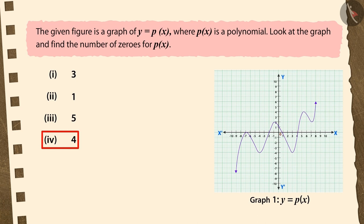If you have chosen the fourth option, it is the correct answer. Well done! This graph intersects the x-axis at a total of four points. So here, the number of zeros of the polynomial px will be four.